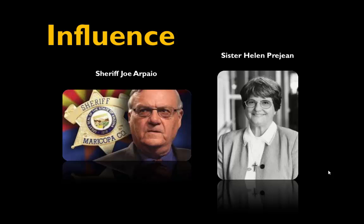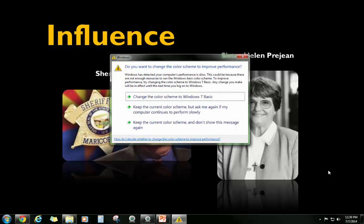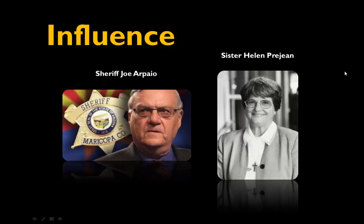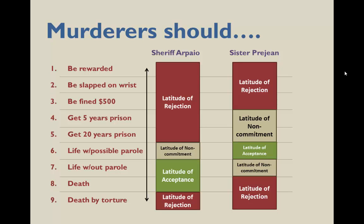So let's take a look at how this works on a particular topic. We're going to imagine what two particular individuals believe about the issue of capital punishment or the death penalty. Sheriff Joe Arpaio is the sheriff of Maricopa County in Arizona — he's quite vocal about his beliefs on all law enforcement issues, including the death penalty. Sister Helen Prejean has been an activist against the death penalty in the United States for many years and has written books about it — one of her books was made into a very famous movie. Here we see a possible continuum of anchor statements from very lax to very severe.